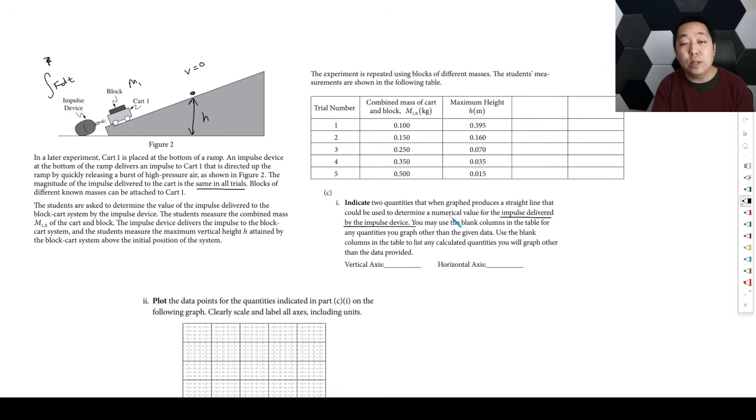We need to indicate two quantities that when graphed produce a straight line that could be used to determine the numerical value for the impulse. We want to derive a relationship. The impulse is going to cause a change in momentum, so that's MV final minus MV initial. It launches from rest, so that's zero. We need to know how fast it's moving. However, we are not recording how fast they're going, we are recording how high they're going. So we can use conservation of energy to go from there to there.